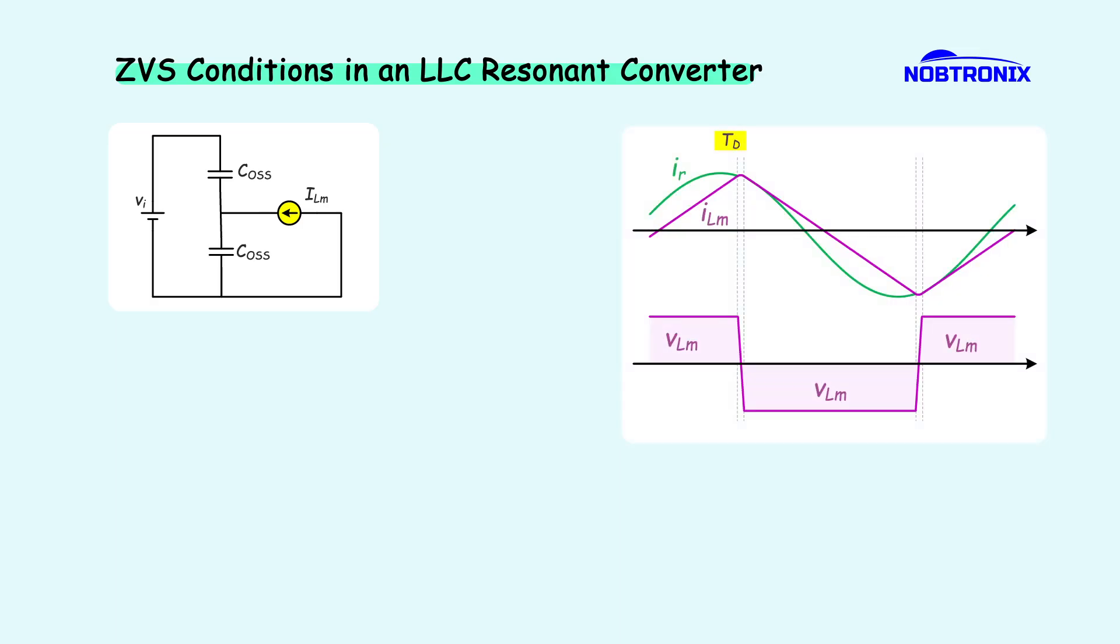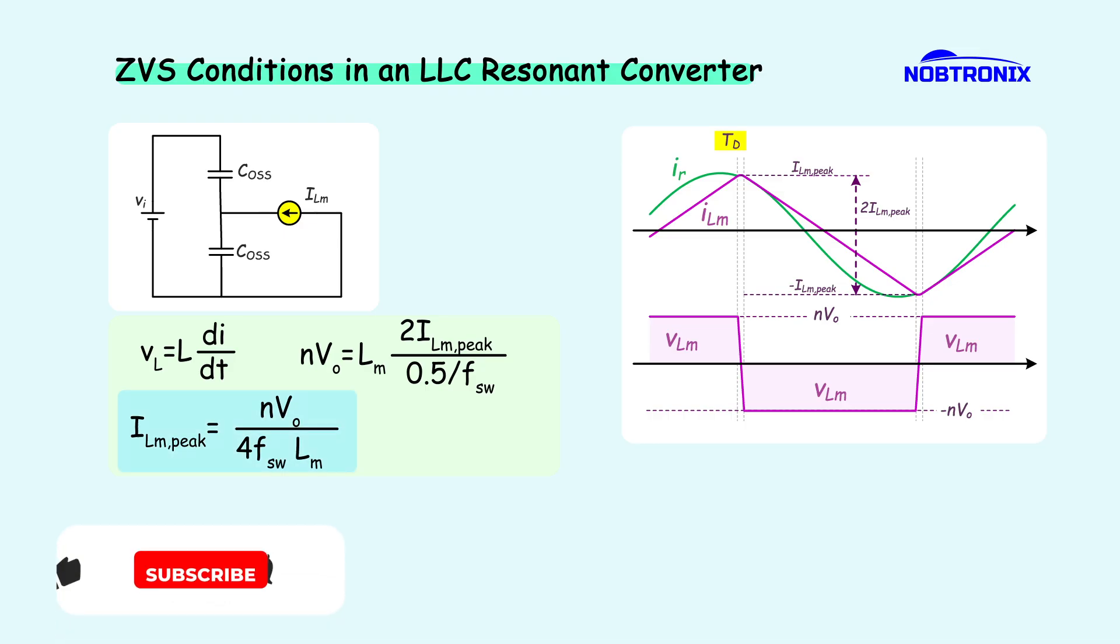So, our first step is to find that maximum magnetizing current. We'll use the basic current voltage relationship for an inductor to do that. The voltage across the magnetizing inductor is a square wave. Its positive and negative peak are the same and equal to the output reflected voltage. That's N multiple by VO. And delta T is equal to half of the switching period. With a little bit of math, we can get the formula for the peak magnetizing current.